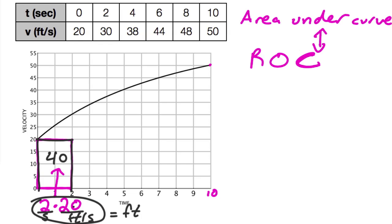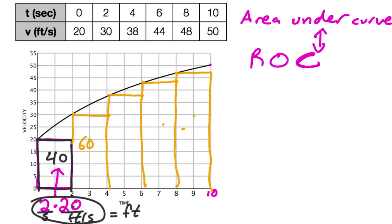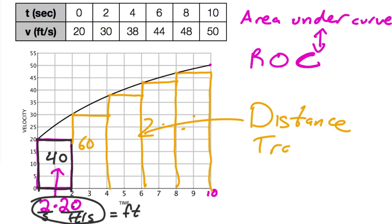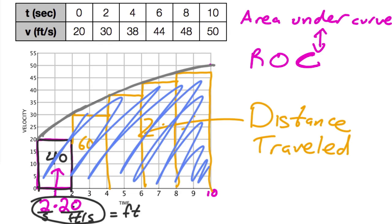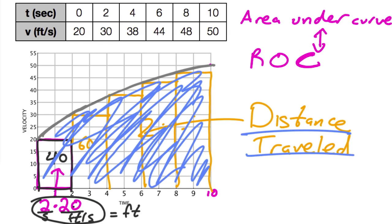That two times 20 equals 40, which is an approximation of the distance the car has traveled in those first two seconds. Then if you do the same thing again you get two times 30, which is 60. So your Riemann sum — this is the left-hand approximation — if you add up all the areas of these rectangles, you're approximating the distance traveled. This is absolutely key: if your function is interpreted as a velocity or a rate of change, then the area underneath the curve represents the distance traveled.